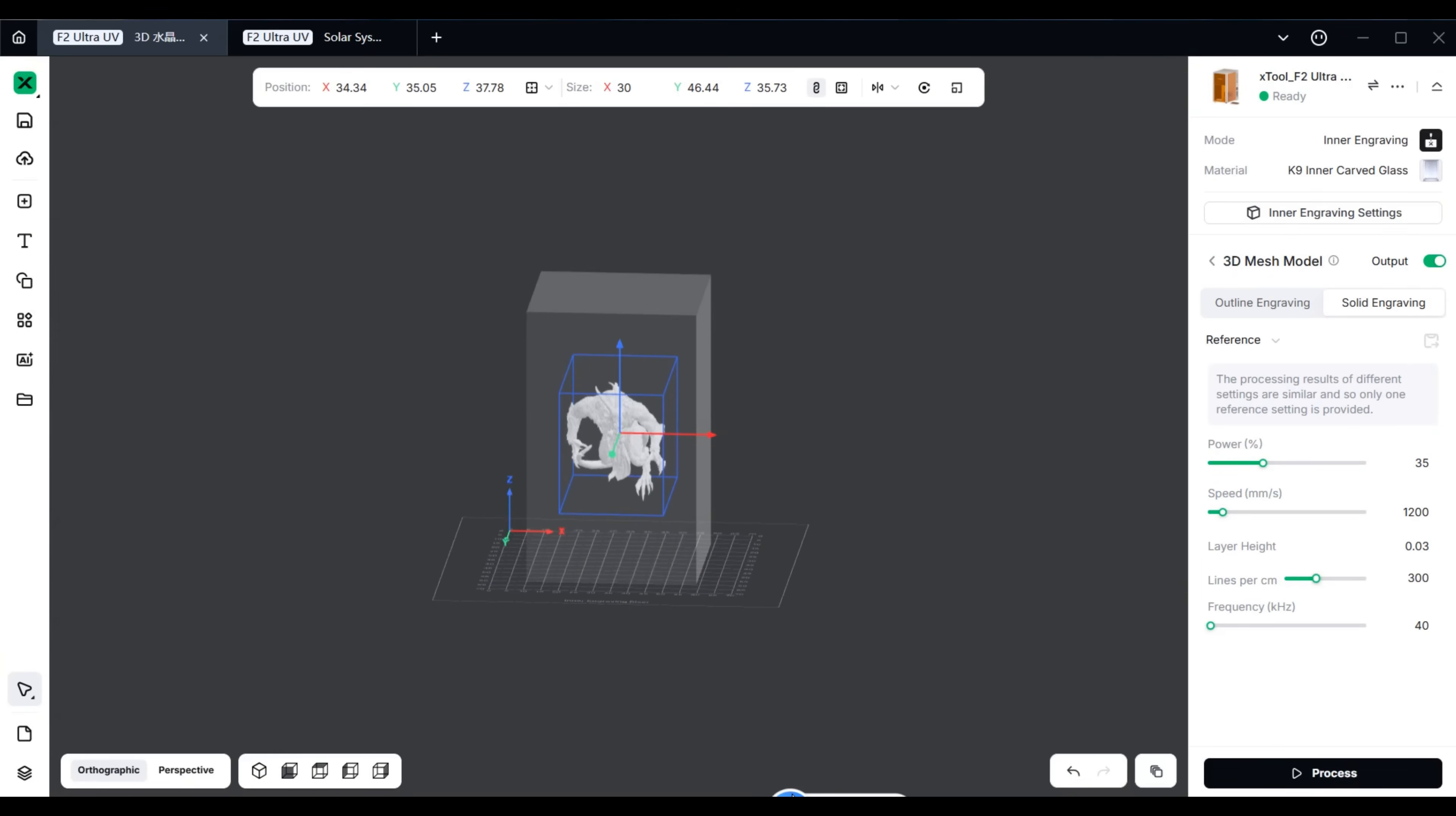Just as simple as flat laser engraving, X2 Studio has built-in first-time-use guides for 3D crystal engraving. Everything is convenient. Simply select the corresponding K9 inner carved glass material and choose outline engraving, and the rest of the engraving parameters will be automatically set.